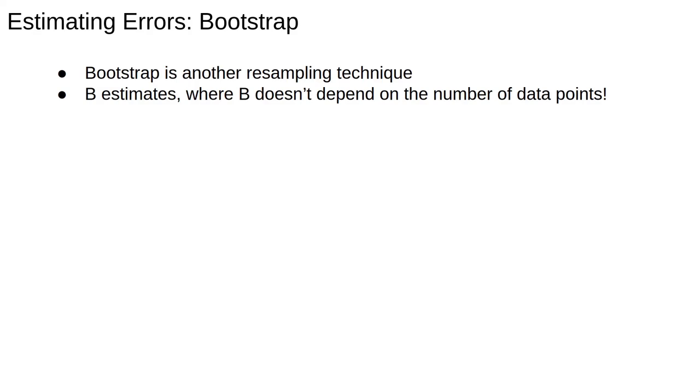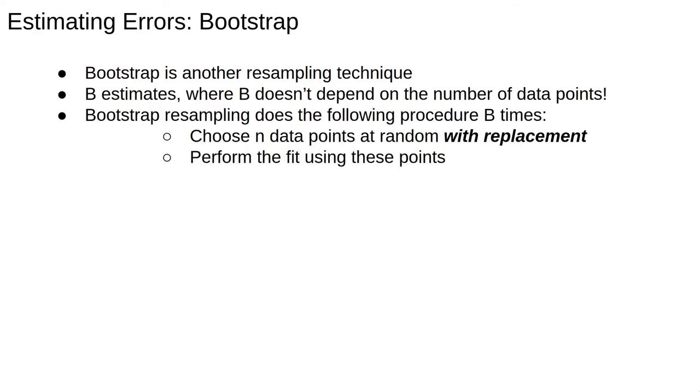Bootstrap resampling is similar to jackknife resampling, except instead of being restricted to n resamplings, we can perform any number, which can be very convenient when the amount of data is large. As a rule of thumb, 100 resamplings is often good enough, and 1000 is almost always sufficient. As before, assume we have n data points. Bootstrap resampling chooses n of the original data points at random with replacement and uses those to perform the fit.